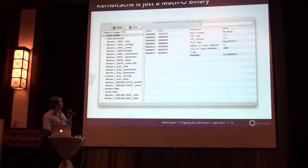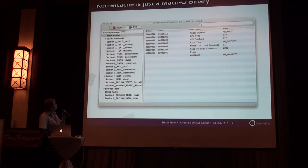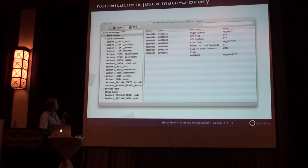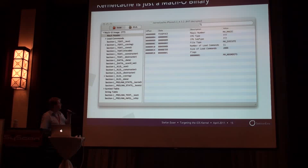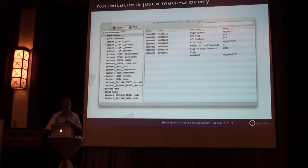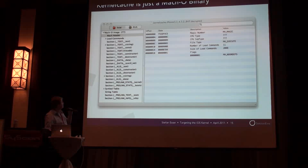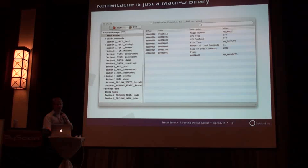For example, when you look at this with MachOView, you will see that it actually contains a lot of sections. Some of them are standard section types like text, C string, const, or data. And some of them have very descriptive names, like constructor or destructor, which are basically lists of constructors and destructors. Pre-linked text and pre-linked info are pre-linked kernel extensions and an XML description of the kernel extensions. Another interesting thing is that the SysCTL set section is actually a list of pointers to all the SysCTL values the kernel supports.